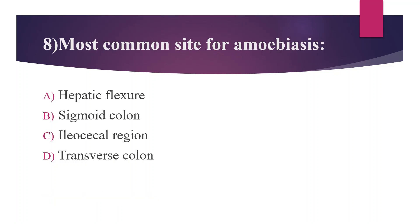Eighth question: Most common site for amoebiasis — option A. Hepatic flexure, option B. Sigmoid colon, option C. Ileocecal region, option D. Transverse colon. The answer is option C, ileocecal region, which is the last portion of the small intestine. Intestinal amoebiasis in this region is very important.